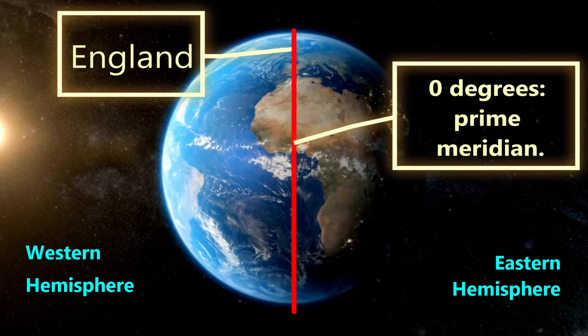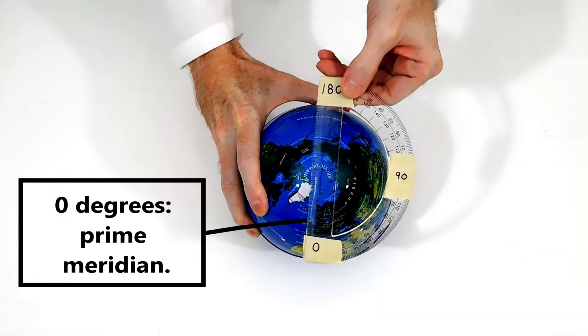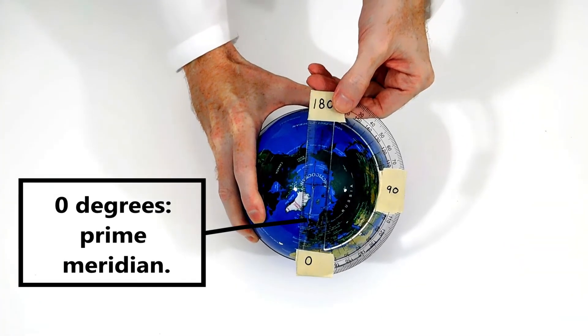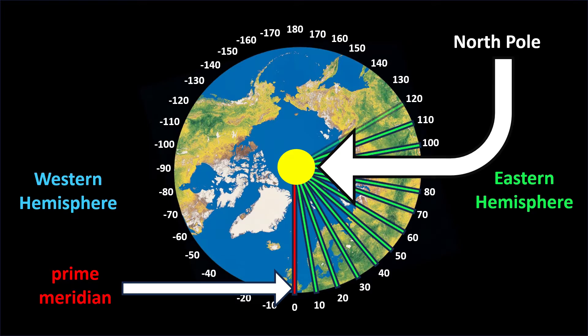This line of longitude has a special name, which is the prime meridian. Next, we put the protractor on the North Pole with the protractor's zero-degree line on top of the prime meridian. Then we can see where each degree will be on the Eastern Hemisphere. We can repeat this process for the Western Hemisphere.